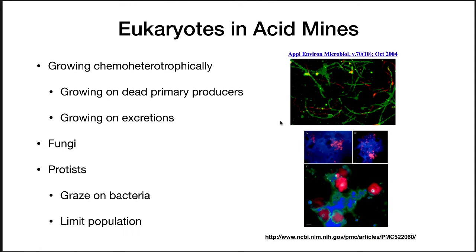You might think that only bacteria or archaea can survive in this environment, but that's simply not the case. Eukaryotes can also survive in acid mines. They grow chemoheterotrophically on dead primary producers — the Leptospirilla and Ferroplasmas will grow, some will die, and that carbon becomes available to these chemoheterotrophs. There are fungi that can grow this way, and also protists that graze on bacteria and limit biofilm population growth — all at a pH of 1, which is pretty amazing.